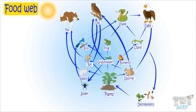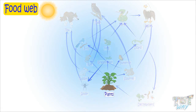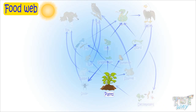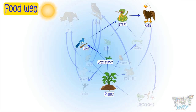Now let's see the various food chains in this food web. Plants are eaten by butterflies, butterflies by lizard, and lizard by eagle. Plants are eaten by grasshopper, grasshopper by frog, and frog by snake. Again, plants are eaten by grasshopper, grasshoppers by birds, birds by snake, and then snake by eagle.